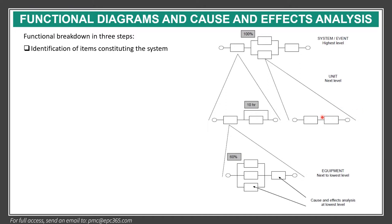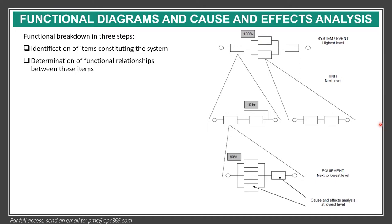The functional breakdown is normally done in three steps. First is identification of items considering the system — for example, the system that we look at. Then comes the determination of functional relationships between these items.